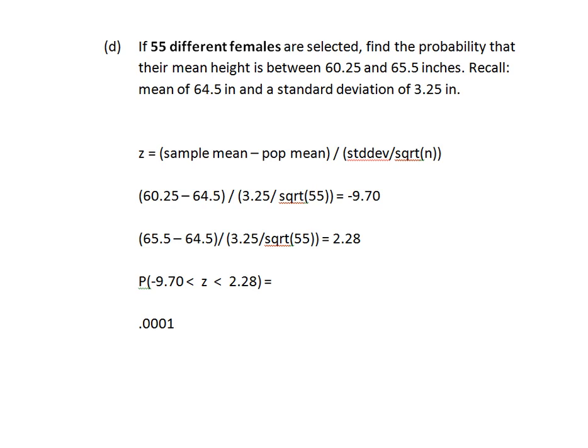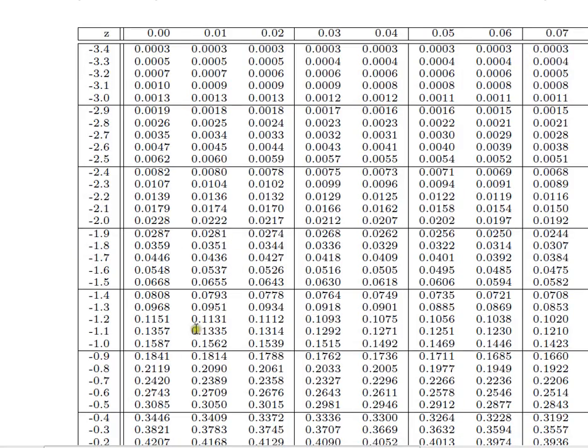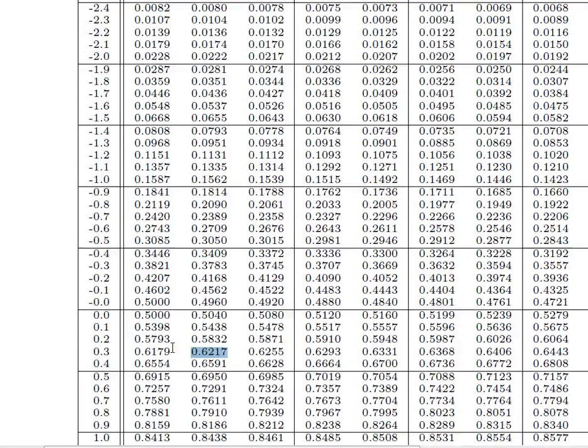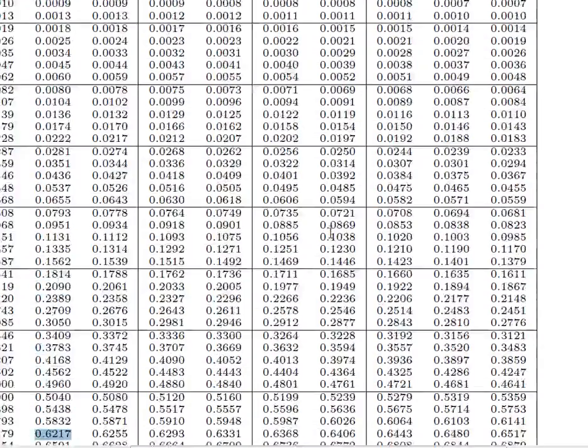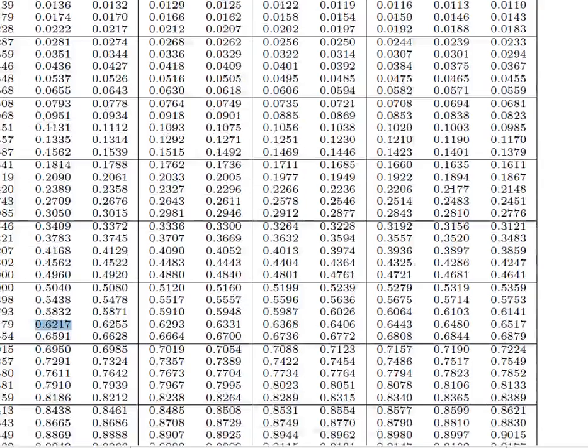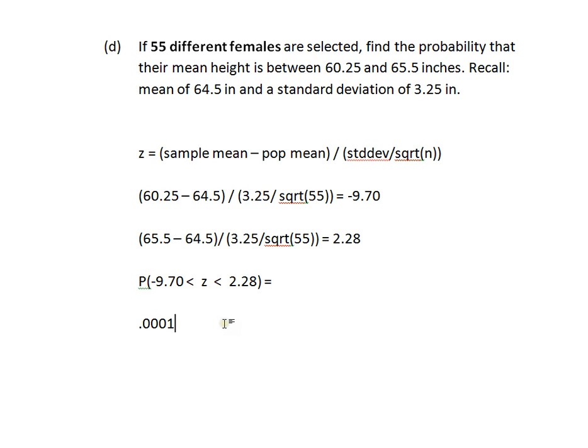Now, for 2.28, I need to use the Z value and figure out what's the area under the curve up to 2.28. Here's 2.2. This is 2.20, 2.21. Let's find 8. Let's find 8 up here, and then we'll come back down for it. 8's this column. So 2.28 is right there. That's 0.9887. So that's the area up to that number of standard deviations. I'm going to write it up front here, 0.9887.